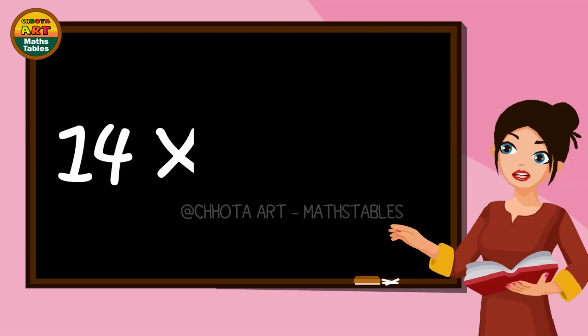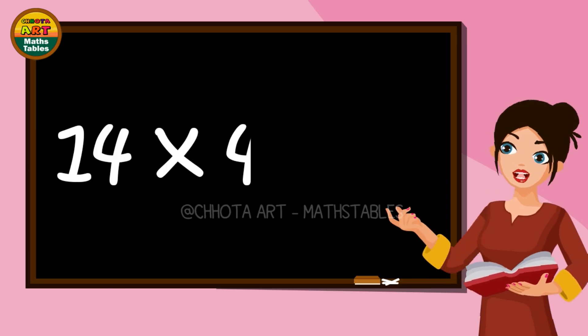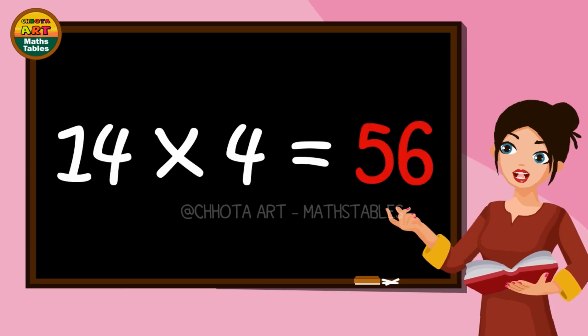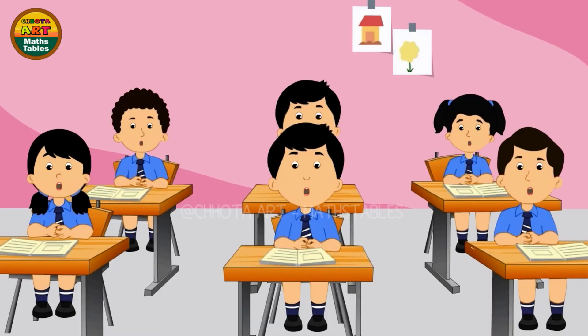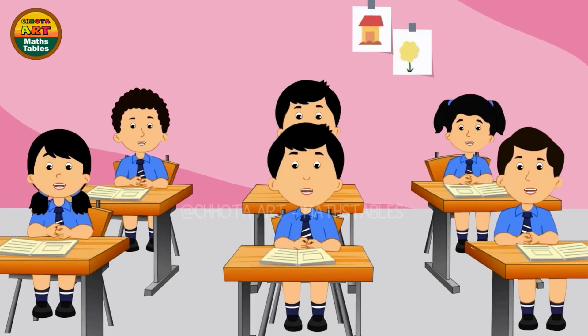14 threes are 42. 14 threes are 42. 14 fours are 56. 14 fives are 70. 14 fives are 70.